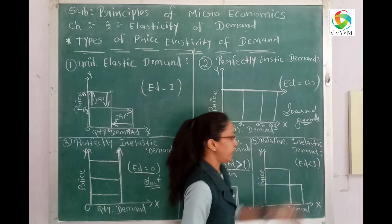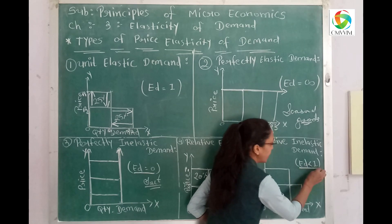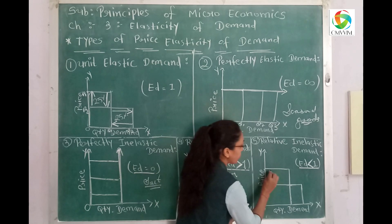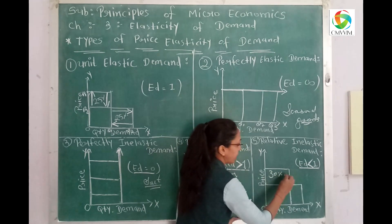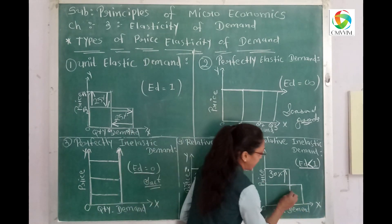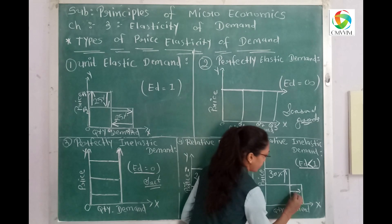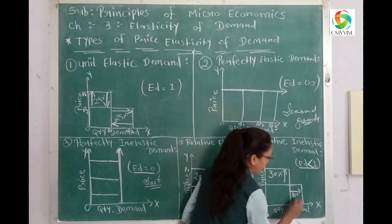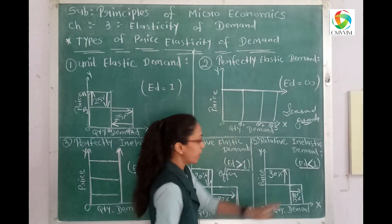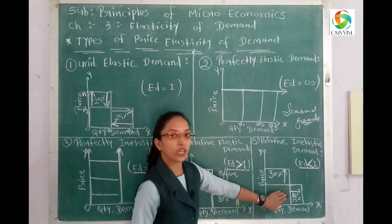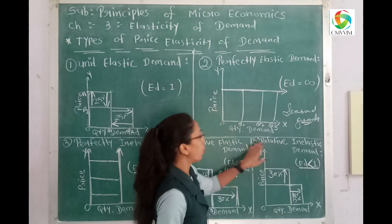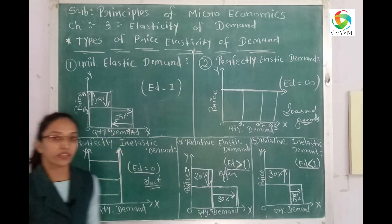Fifth and last: relative inelastic demand, where elasticity of demand is less than one. Here, if price increases by 30%, demand decreases by only 10 to 15 percent — the change in demand is less than the change in price. That covers all the types of price elasticity of demand. Thank you so much.